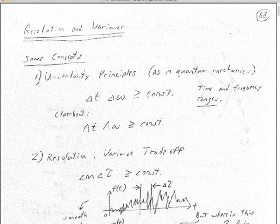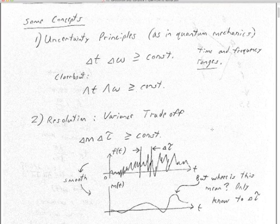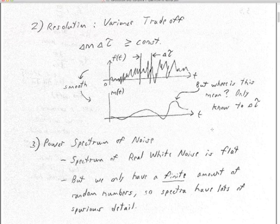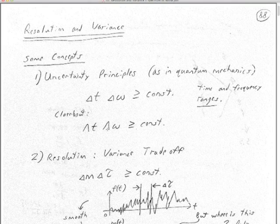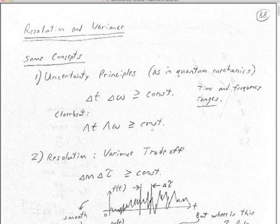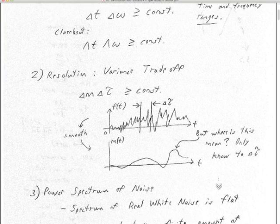Continuing in resolution and variance, the first thing we're going to look at are uncertainty principles and a trade-off. You can know the frequency very accurately, but then you don't know where it is in time very accurately — because those two lengths, when multiplied together, can't be zero. You can know the time something occurred very accurately, but then you don't know the frequency of that event very accurately. That's what the uncertainty principle is about — essentially Heisenberg's uncertainty principle.